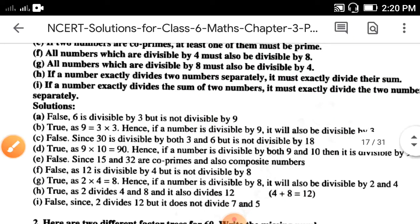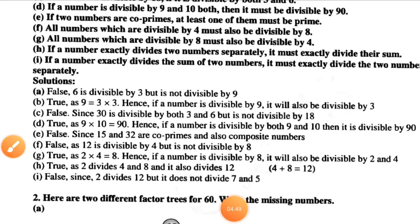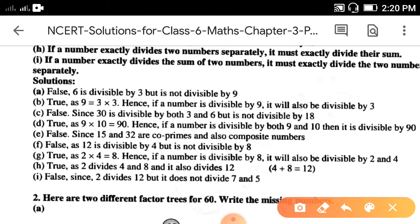Part g: all numbers which are divisible by 8 must also be divisible by 4. This is true, because factors of 8 include 2 and 4 — 2 fours are 8 — so if a number is divisible by 8, it will obviously also be divisible by 2 and 4.